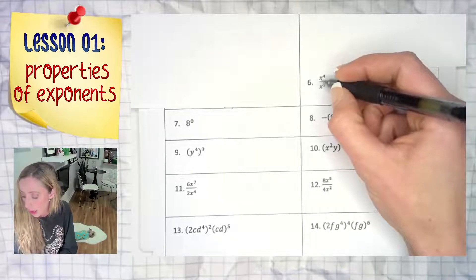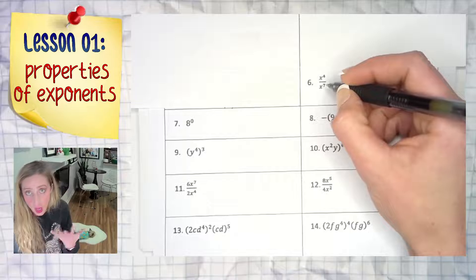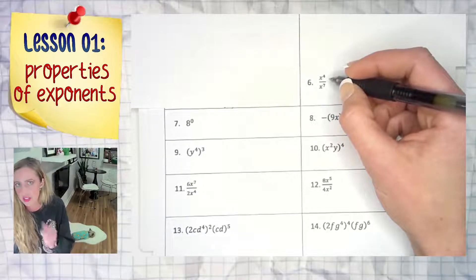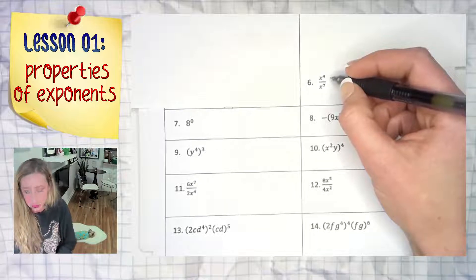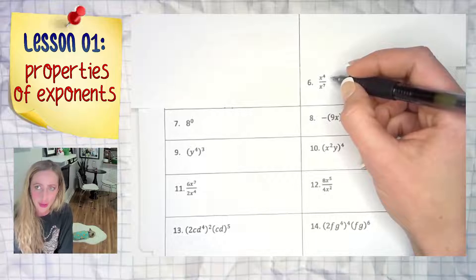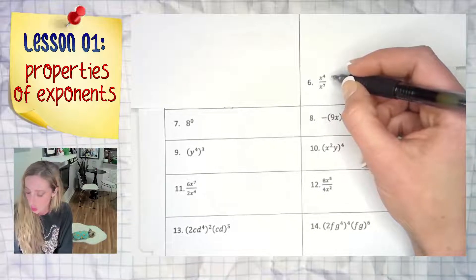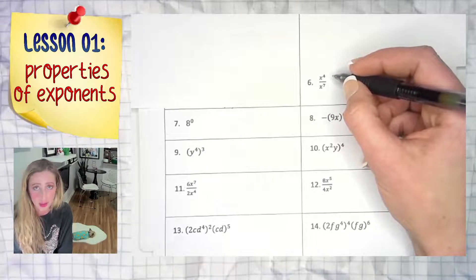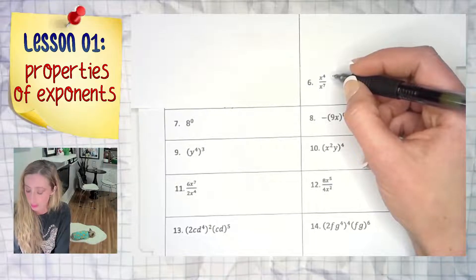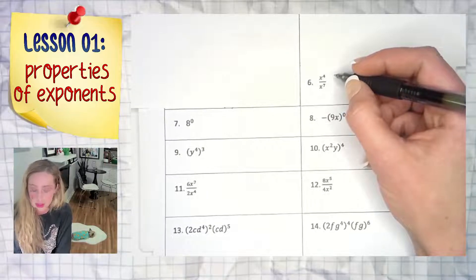Some people prefer to deal with the product property where they would bring x to the seventh up and make it a negative power. So it would be x to the four times x to the negative seven. Add those two numbers: four plus negative seven, also known as four minus seven, get x to the negative third, and then rewrite it as one over x to the third. So that's your answer.